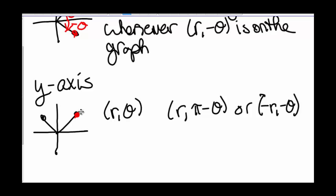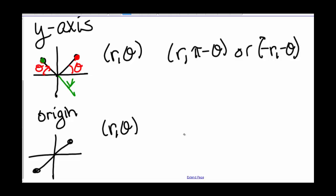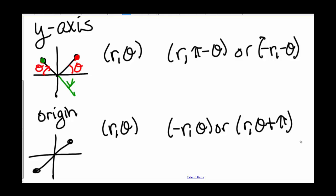We can think of y-axis symmetry as: pi minus theta means we go around pi and subtract this angle theta with the same radius, or we think of it as (-theta, -r). Finally, symmetry about the origin means that if (r, theta) is on the graph whenever (-r, theta) or (r, theta + π) is on the graph, then we have symmetry about the origin. The negative r takes us through the pole to the other side with radius r, or we go over pi plus theta to reach the symmetrical point.